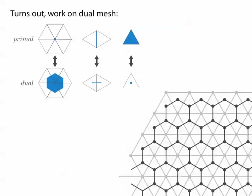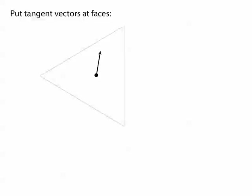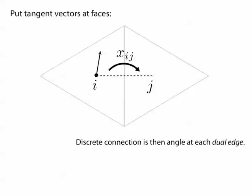If we put a single unit vector at every face, then a discrete connection is just going to be an angle on each dual edge that tells us how this vector changes as we move from one face to the next.